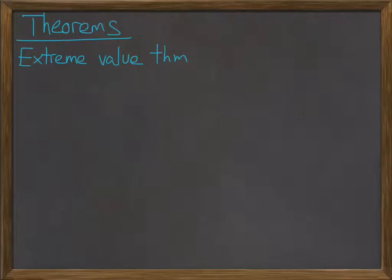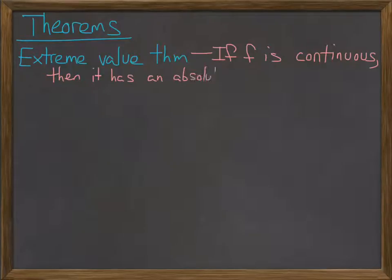So the Extreme Value Theorem said if a function is continuous, then it has to have an absolute max and min. So any generic function on an interval has an absolute max and min. Things with vertical asymptotes don't have absolute extrema because they're not continuous.